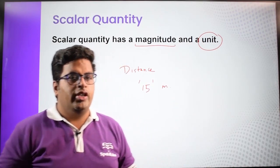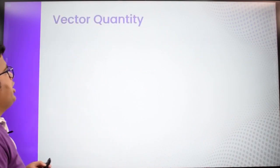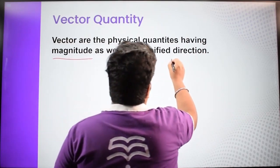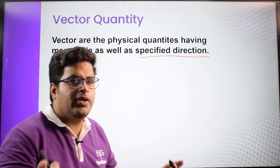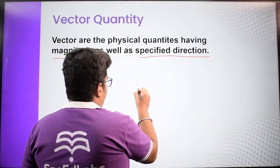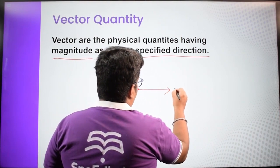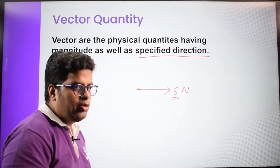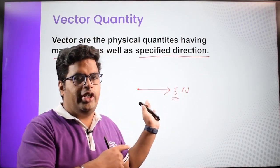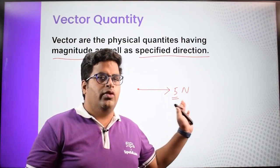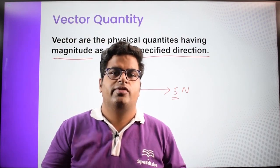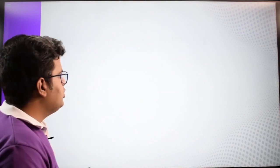When we talk about a vector, it is basically a quantity that has magnitude as well as direction. The most important thing about vectors is that they have both magnitude and a specified direction. For example, force: if we apply a force of 5 Newtons on an object, then 5 is the magnitude, Newton is the unit, and this is the direction — so force is a vector quantity.